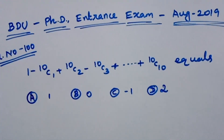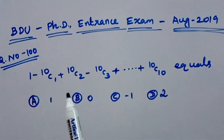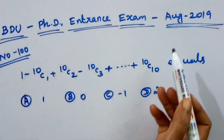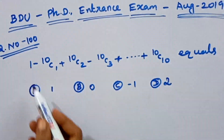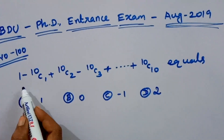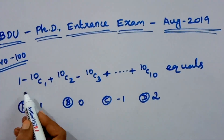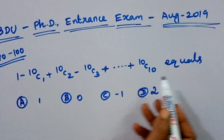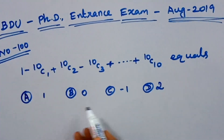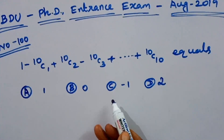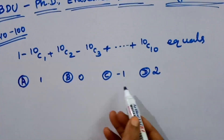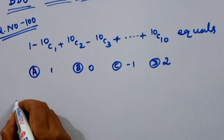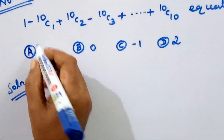Good morning students! We will discuss the questions from Baridasa University, August 2019. We will discuss a series: 1 minus 10c1, plus 10c2, minus 10c3... up to 10c10. The answer options are 0, or minus 1. Let us look at the solutions.